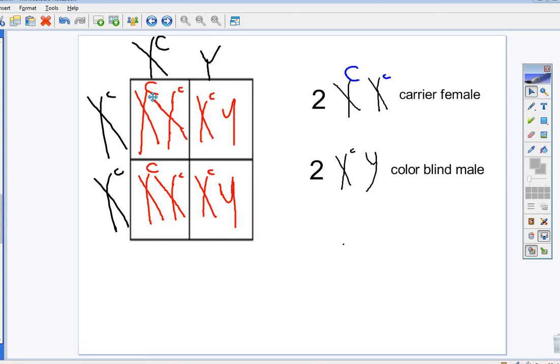Now, I made it red just to see it. And in any of these videos, if I make the X a little bit smaller, it's because I'm having trouble fitting it in. They should be the same size. Let's do some probability. Are any of the daughters colorblind?